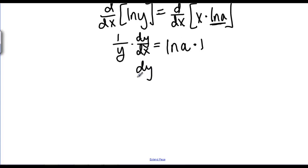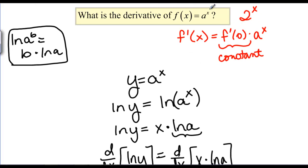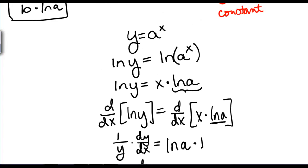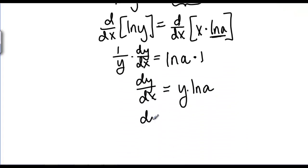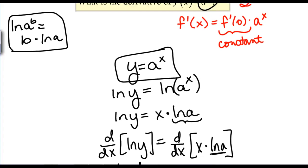Now it's pretty straightforward to solve for DY/DX. We get Y times natural log of A. Since we're trying to make a derivative rule for A to the X, we don't want Y in our answer, so we substitute Y equals A to the X, giving us DY/DX is equal to A to the X times ln(A). That's exactly what we expected — it should be some constant times A to the X, and it turns out that constant is ln(A). There's another new derivative rule.